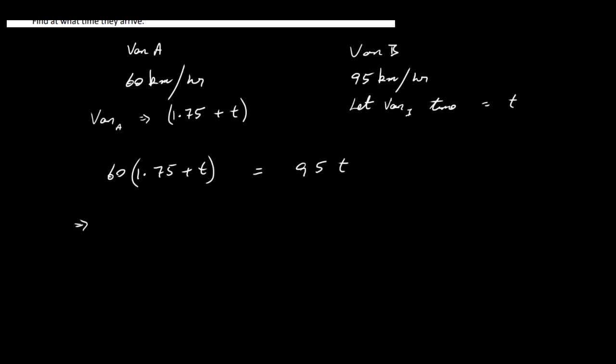That's the main part of this question here. So let's multiply 60 by 1.75. 60 times 1.75 is 105, plus 60T is equal to 95T. 105 is equal to 35T. And then T is equal to 105 divided by 35. So this is going to be 3. So this is going to be 3 hours. This is going to be 3 hours. Now that's the time that van B takes.